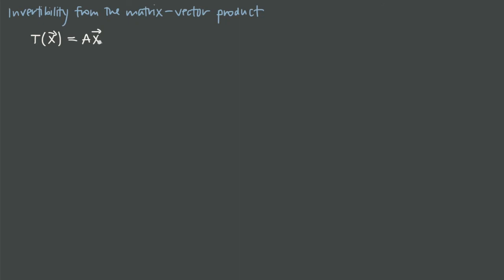The point we want to make now is that when we picture the transformation as A times vector x, the dimensions of A can tell us about the invertibility of the transformation. T can only be invertible when the matrix A is a square matrix.